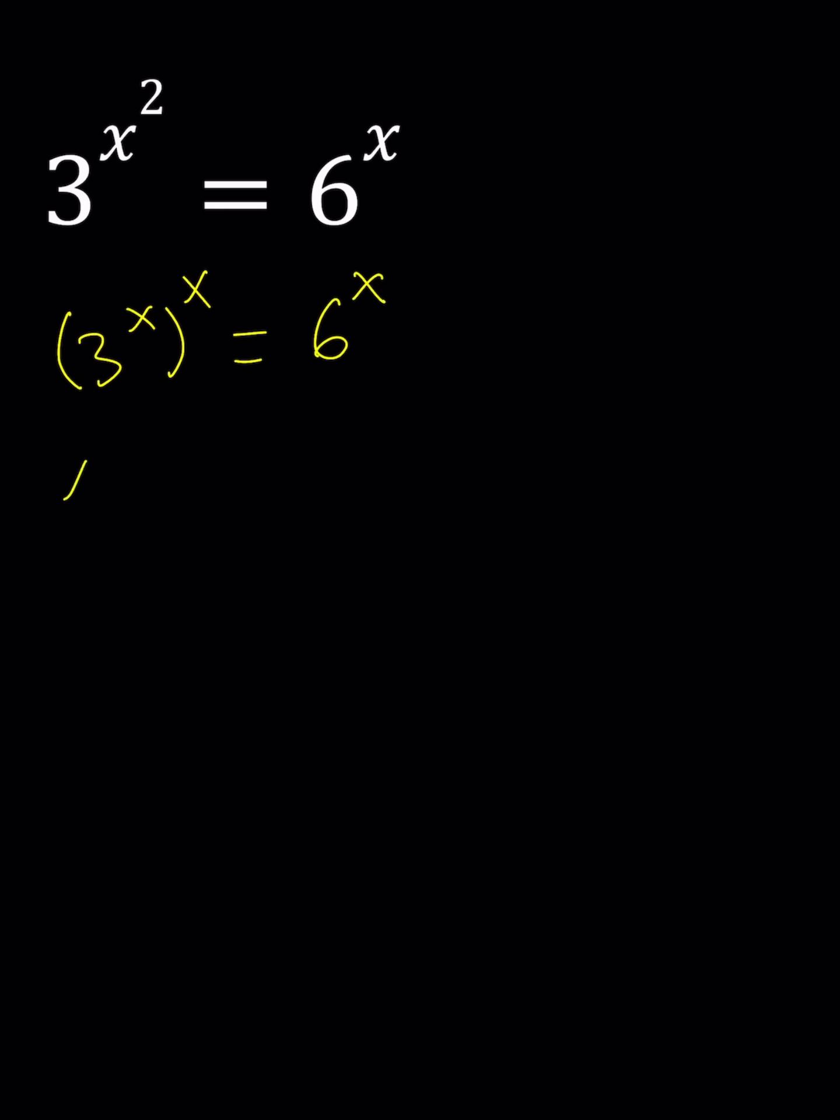Now if x is equal to 0 then we get a solution because this becomes 3 to the power 0 to the power 0 equals 6 to the power 0. They are both equal to 1 so we get a solution.